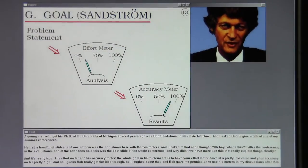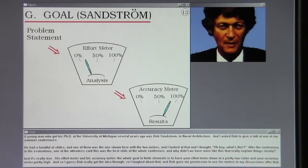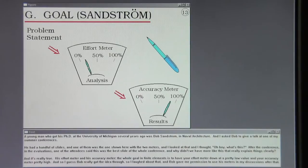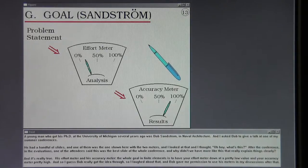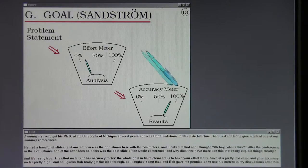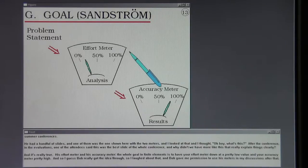A young man who got his PhD at the University of Michigan several years ago was Bob Sandstrom in Naval Architecture. And I asked Bob to give a talk at one of my summer conferences. He had a handful of slides, and one of them was the one shown here with the two meters. And I looked at that and I thought, oh boy, what's this? After the conference and the evaluations, one of the attendees said this was the best slide of the whole conference, and why didn't we have more like this that really explained things clearly? And it's really true. His effort meter and his accuracy meter, the whole goal in finite elements is to have your effort meter down at a pretty low value and your accuracy meter pretty high. And so I guess Bob really got the idea through. So I laughed about that, and Bob gave me permission to use his meters in my discussions after that.